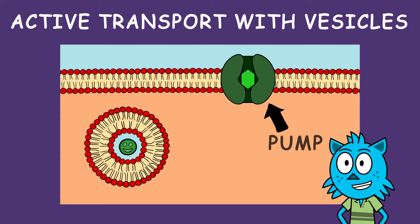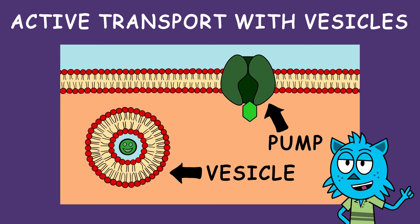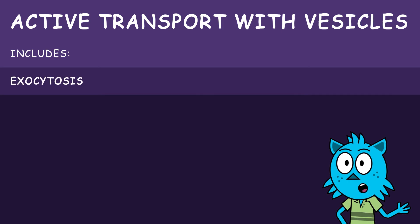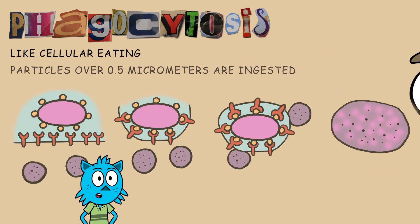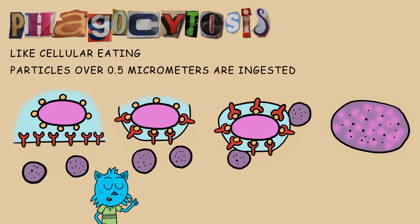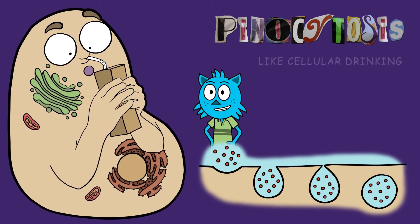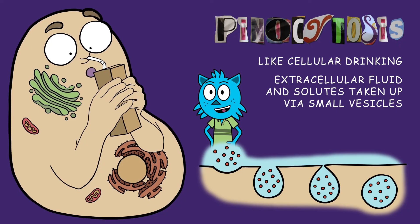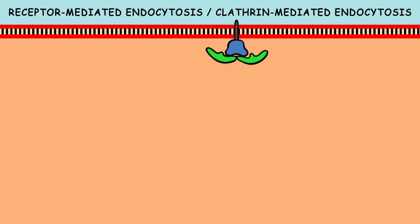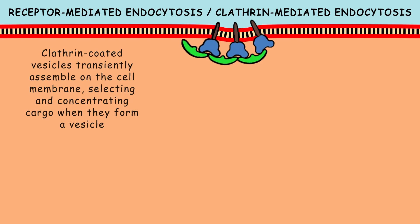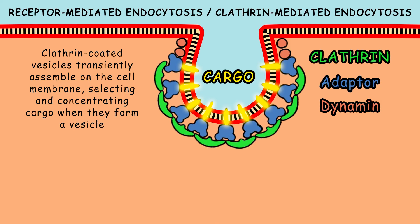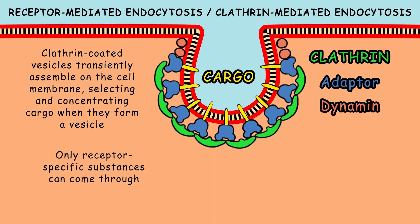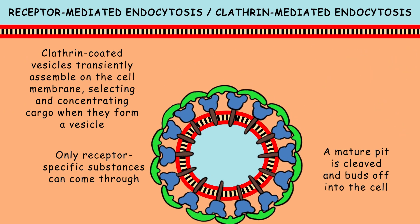Active transport can also include vesicles. Vesicle transport includes exocytosis as well as three types of endocytosis. Phagocytosis is like cellular eating — a cellular process by which particles over one half a micrometer are ingested. Pinocytosis is like cellular drinking, with extracellular fluid and solutes taken up via small vesicles. Lastly, there's receptor-mediated endocytosis, also called clathrin-mediated endocytosis. Clathrin-coated vesicles transiently assemble on the cell membrane, selecting and concentrating cargo when they form a vesicle. In this process, only receptor-specific substances can come through, and a mature pit is cleaved and buds off into the cell.